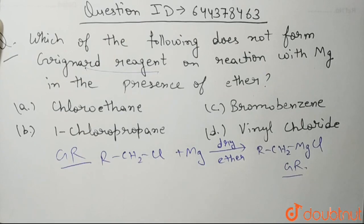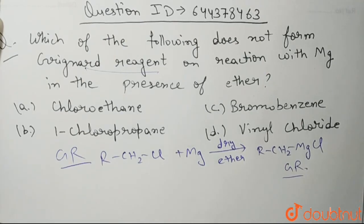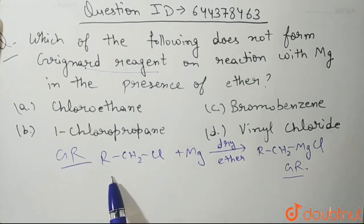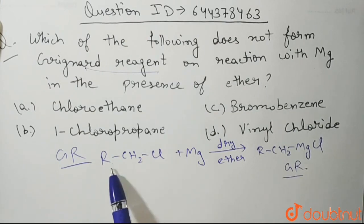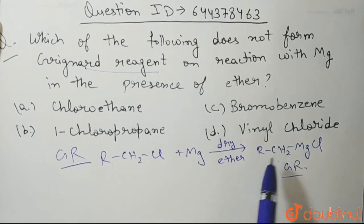So all haloalkanes or you can say alkyl halides and aryl halides also—here R could be any alkyl group, RCH2 could be any alkyl group, it could be aryl group. So they can both form our Grignard reagents.